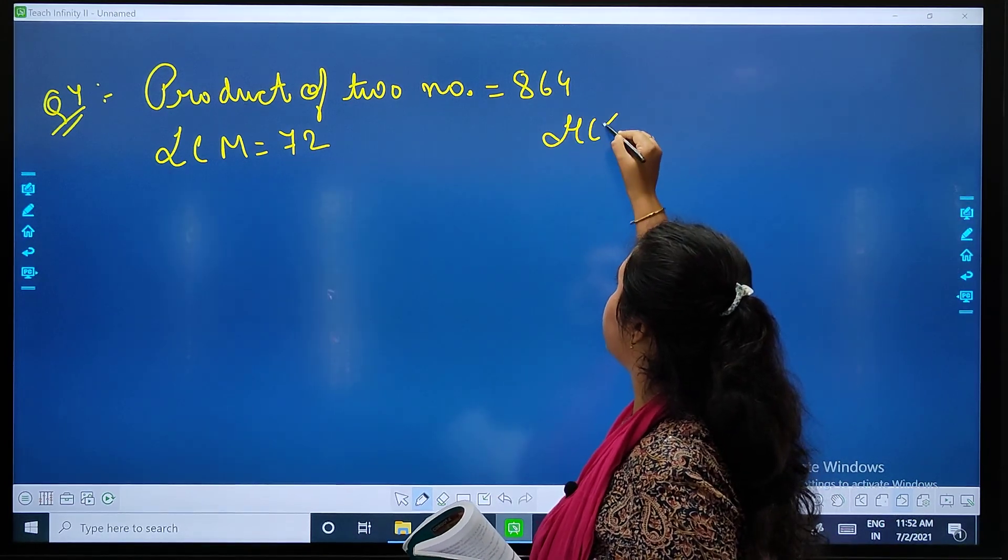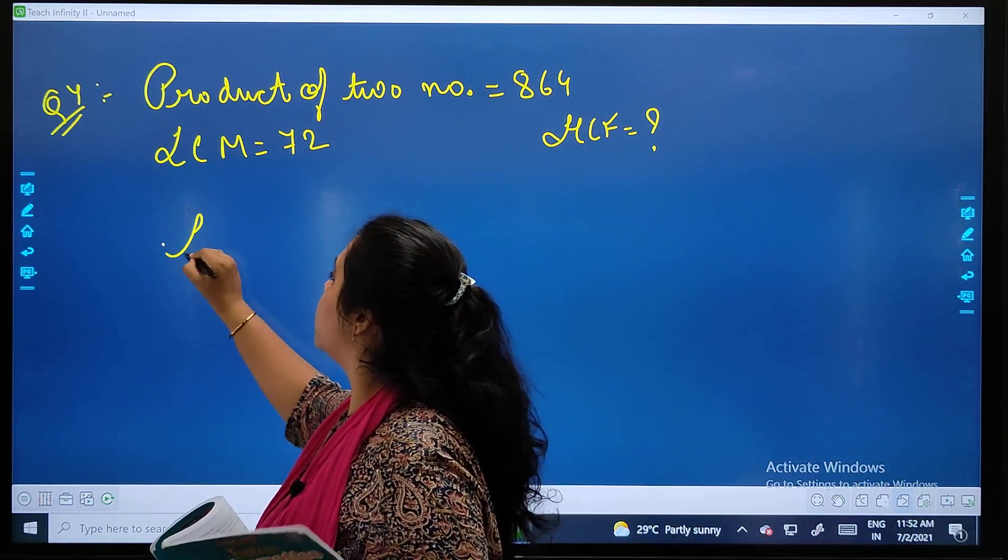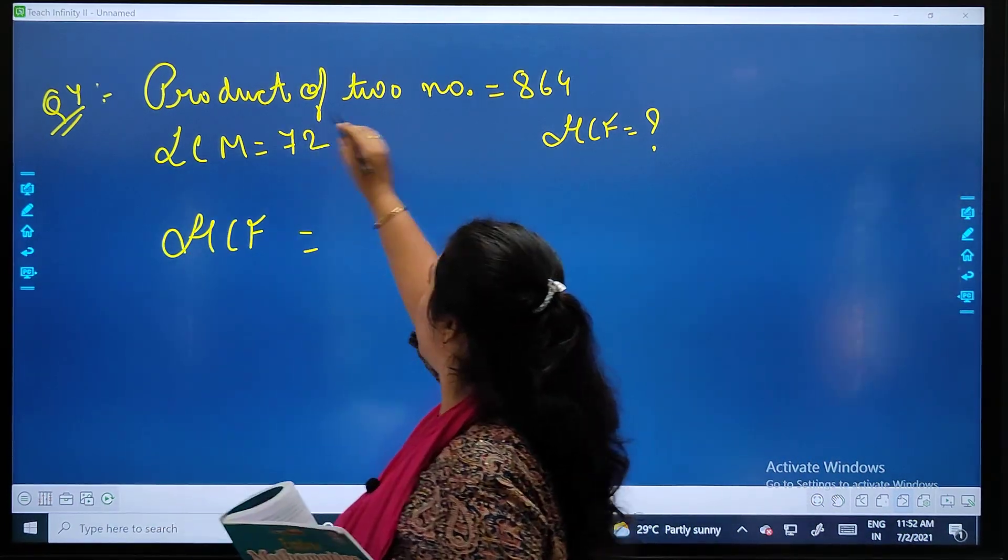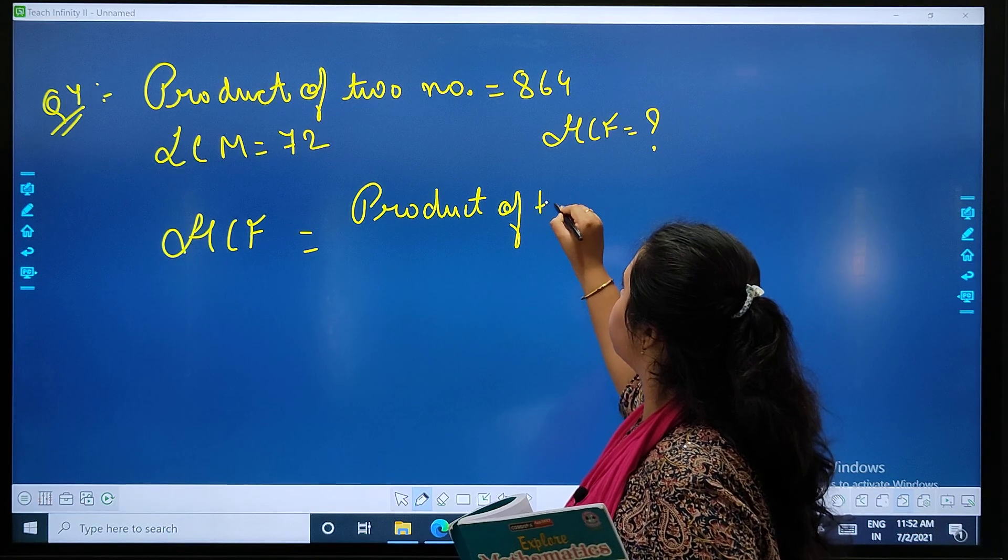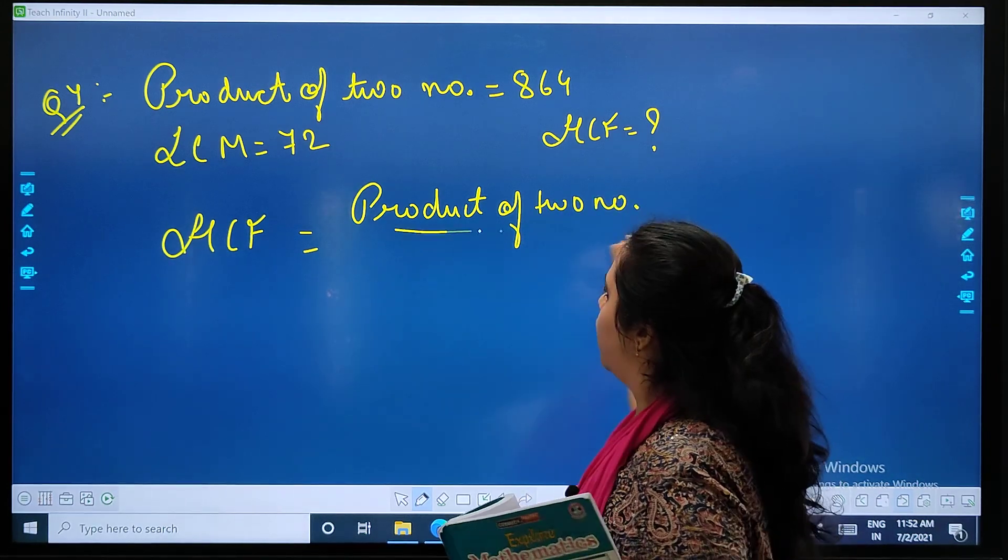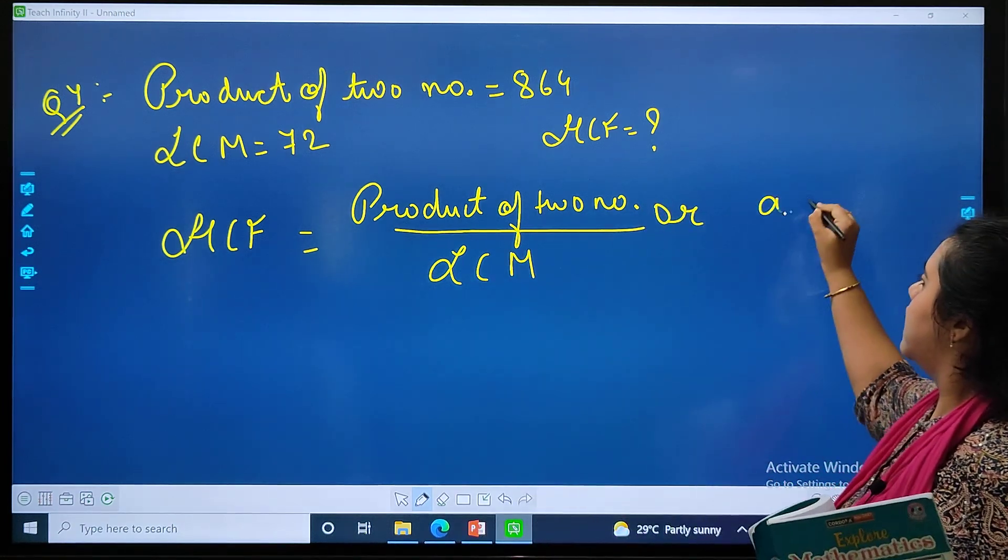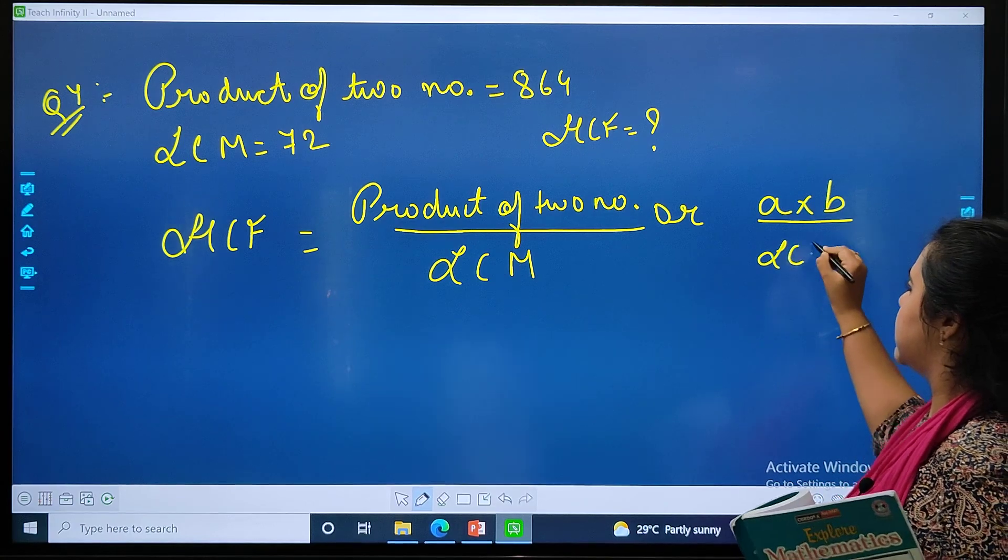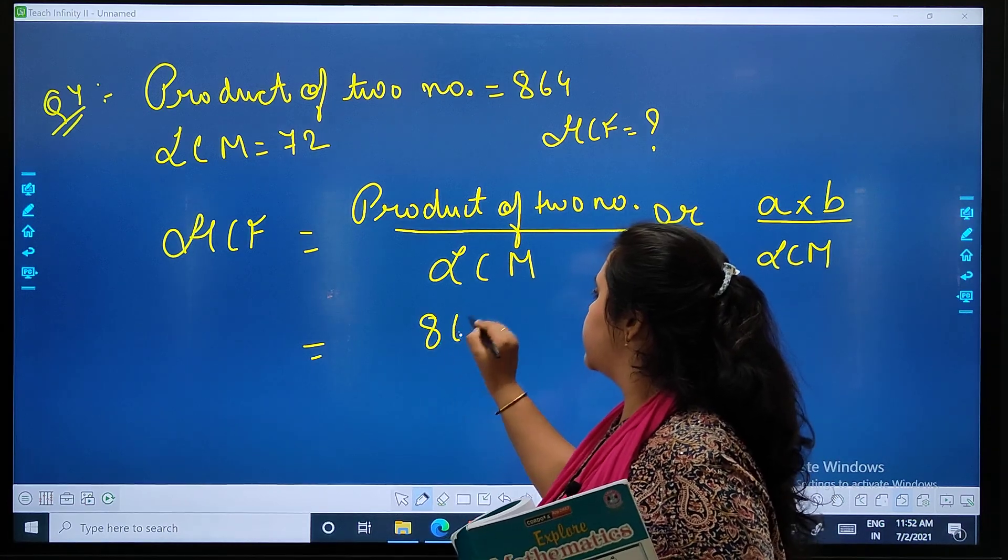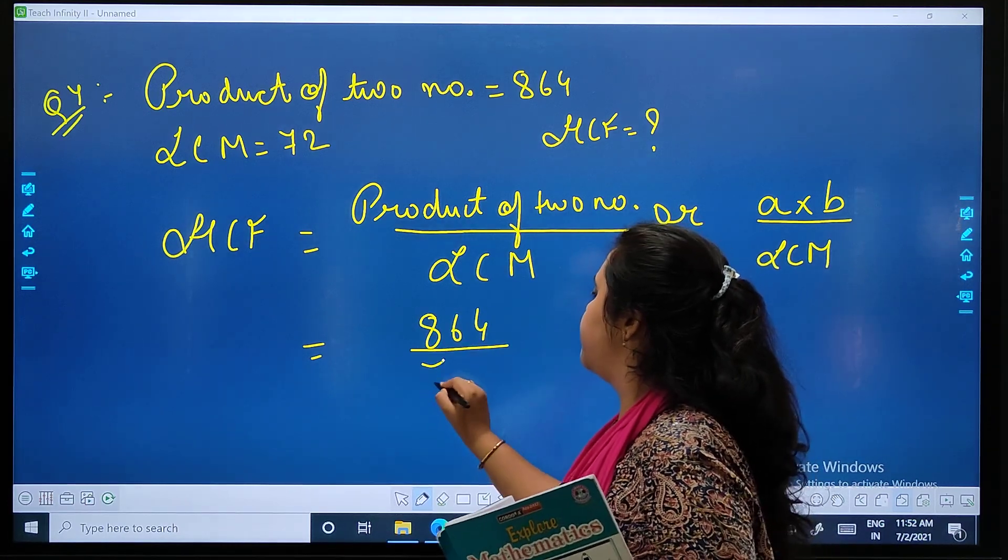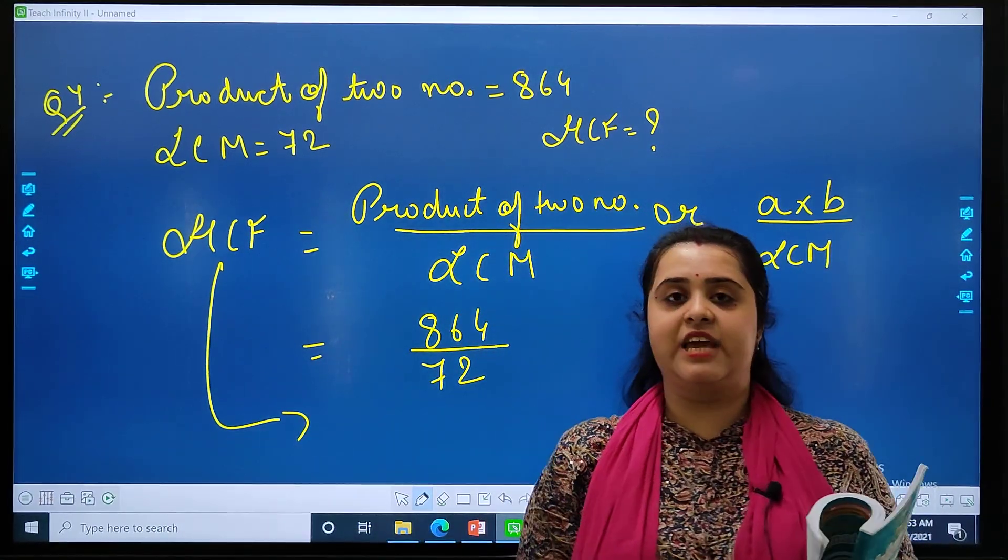What is their HCF? We are supposed to find the HCF. If you remember, we have discussed this formula also. HCF equals to product of two numbers upon LCM, or you can write it as A into B upon LCM. Product of two numbers, that means 864 upon LCM is 72. Divide and you will be getting your answer as HCF. Done, easy.